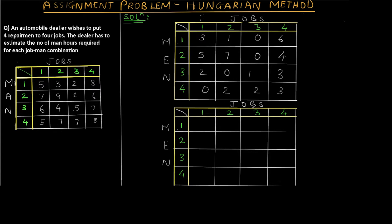In Step 2, we examine each column of the new matrix and subtract the column minimum from each value. For column one, the minimum is 0, so values stay unchanged. For column two, the minimum is again 0, so values stay unchanged. For column three, the minimum is 0, so values stay unchanged. For column four, the minimum is 3, so subtracting 3 from each gives us 3, 1, 0, 0. Step 2 is done.